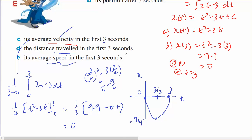So the distance traveled in the first 3 seconds: it goes down 9 over 4, then comes back 9 over 4, so the distance traveled is 9 over 2 meters.